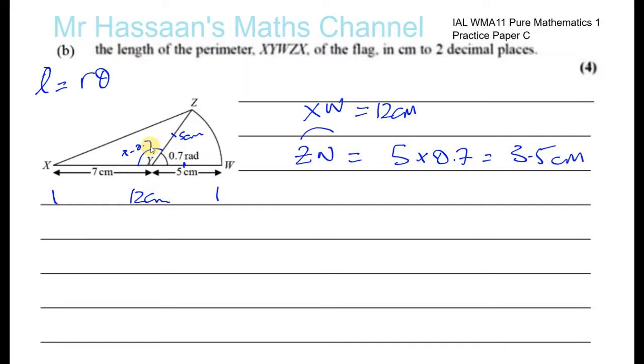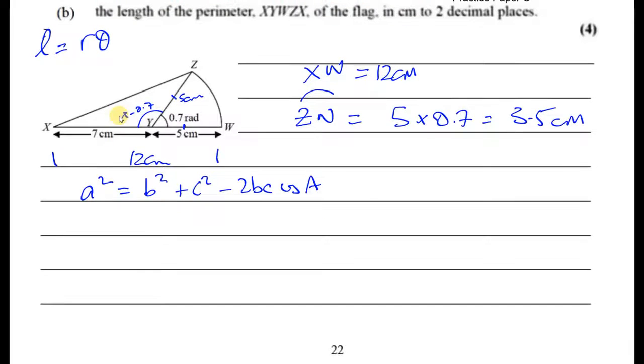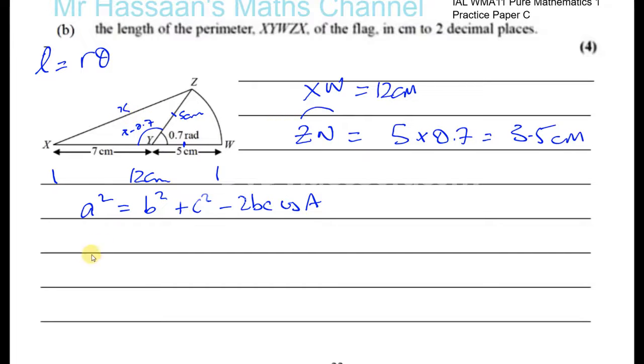To find the length of a line when we know two sides and the angle between them, we use the cosine rule. The cosine rule states that a² = b² + c² - 2bc cos A. For XZ, let me call it x: x² = 7² + 5² - 2(7)(5)cos(π - 0.7). We have to make sure our calculator is in radian mode.